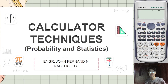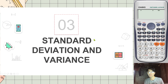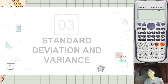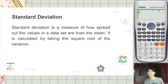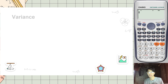Good day engineers and welcome back to another calculator technique for probability and statistics. In this video we will be discussing standard deviation and variance. Standard deviation is a measure of how spread out the values in a data set are from the mean. It is also calculated by taking the square root of the variance.